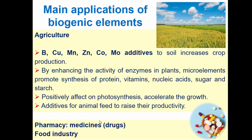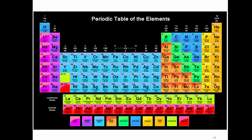Let's stop on the applications of biogenic elements. Biogenic elements, besides in pharmacy as medicines, drugs, and vitamins, are also applied in food industry and agriculture. For example, boron, copper, manganese, zinc, cobalt, molybden as additives to soil increase crop production. By enhancing the activity of enzymes in plants, microelements promote synthesis of protein, vitamins, nucleic acids, sugar, and starch. These elements positively affect photosynthesis processes and accelerate the growth of plants. They are also good additives for animal feed to raise productivity.